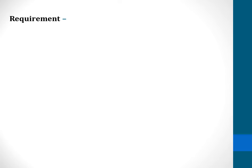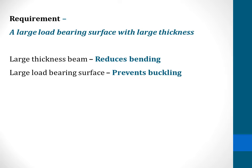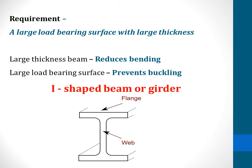We now know that we require a beam having a large load-bearing surface with a large thickness. A large load-bearing surface prevents buckling and a large beam thickness reduces bending. The ideal solution meeting these requirements is the I-shaped beam or girder. Looking at the I-shaped beam, it has a large load-bearing surface at the top and bottom, called flanges, and at the center the beam has a large thickness — this section is called the web.